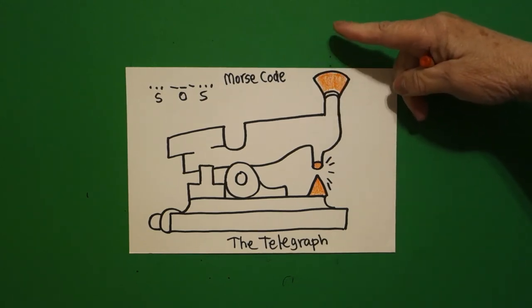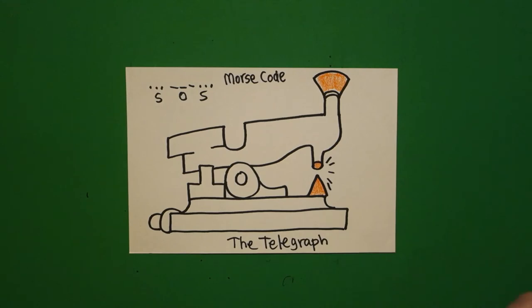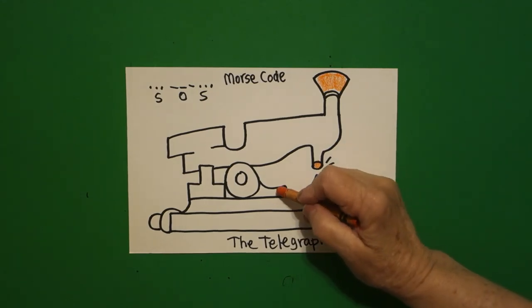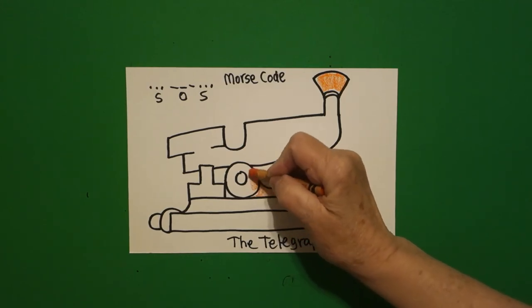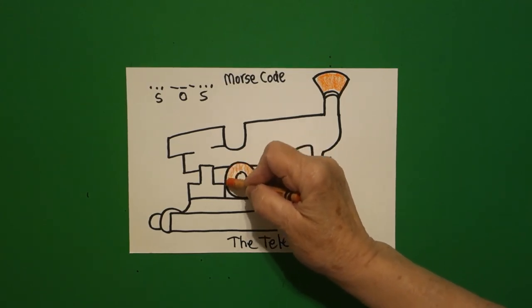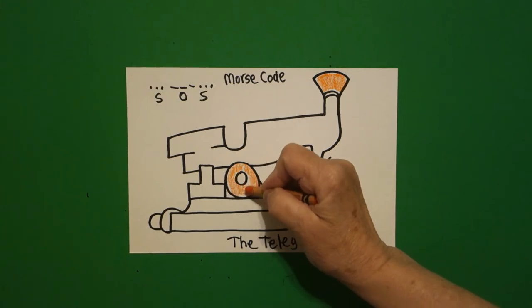And up here is where the telegraph operator would click out the Morse code message. So your finger would go click, click, click, click, click like that. Okay, these are all the mechanics I'm doing in the red, orange.